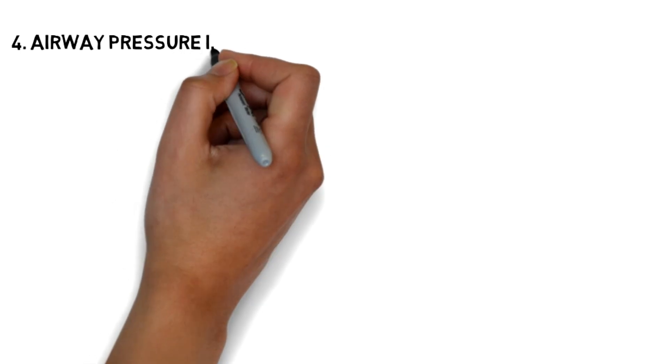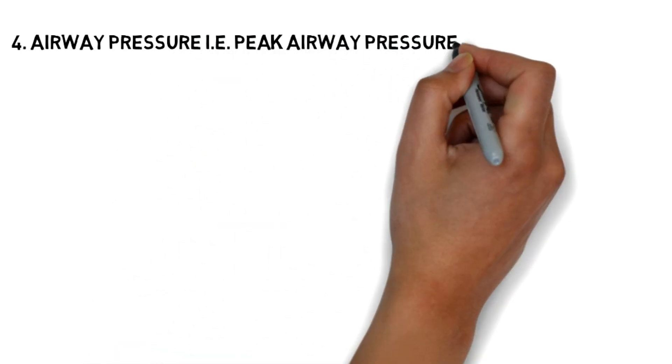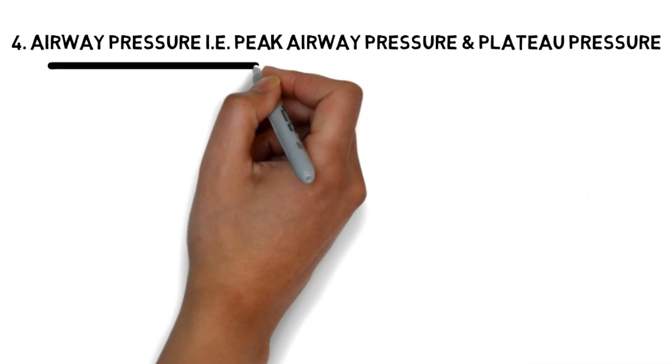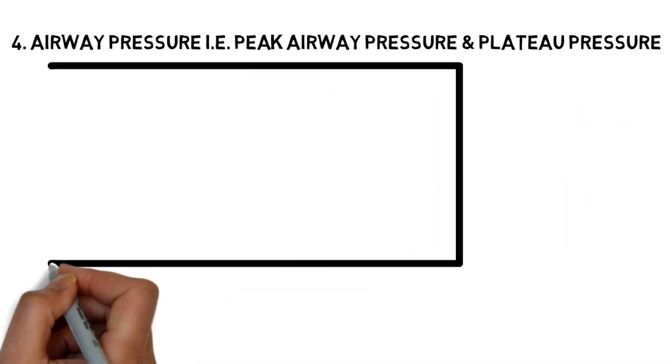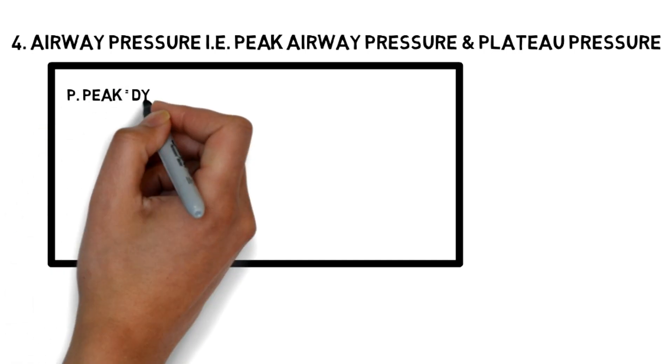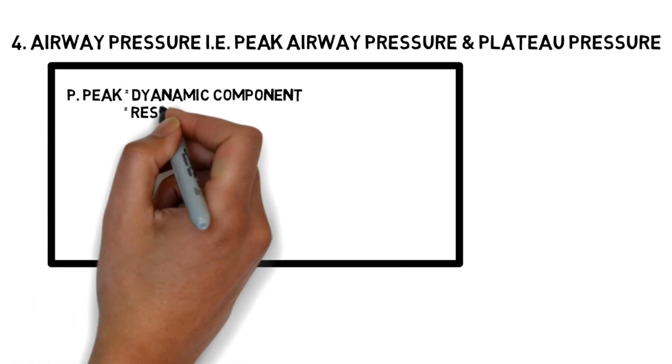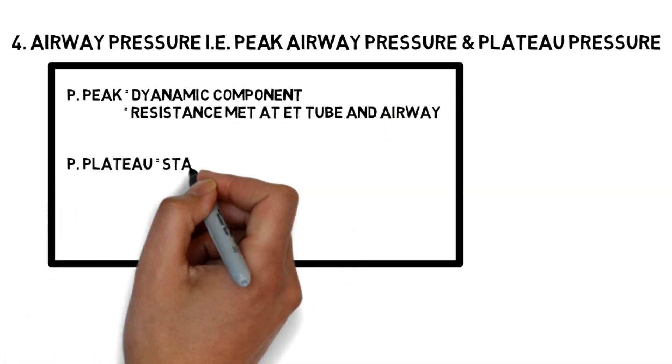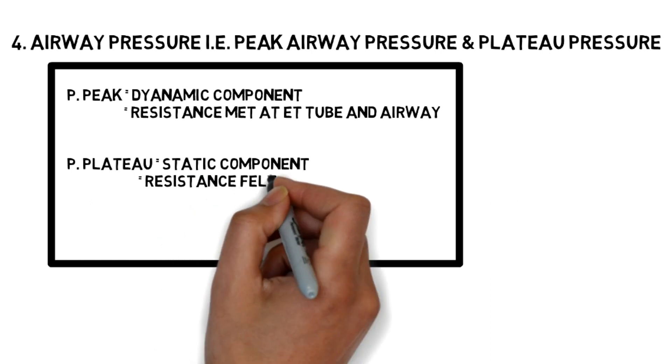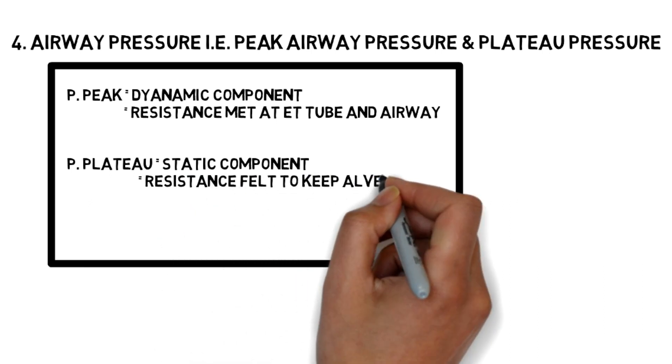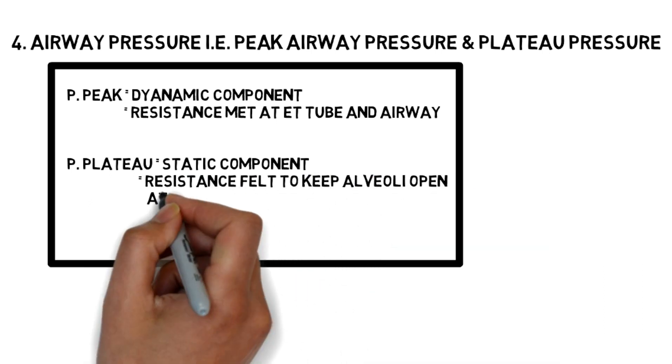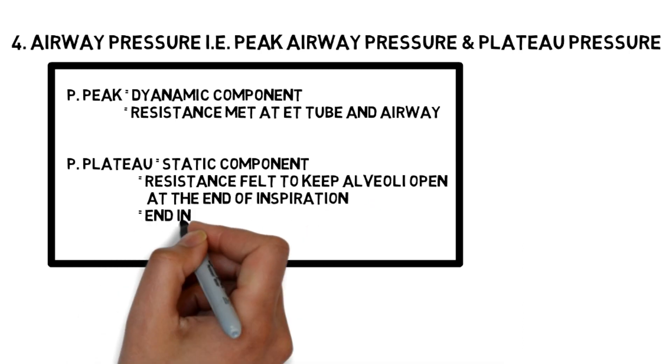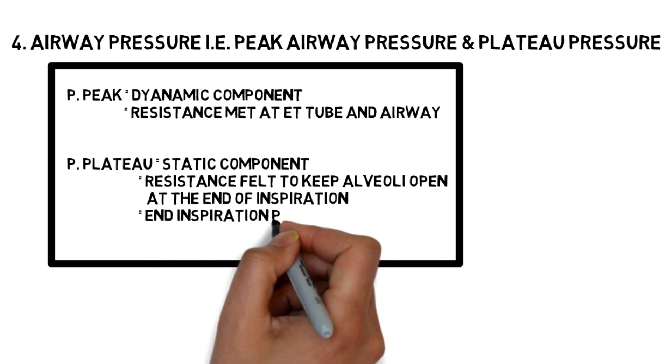The fourth criteria is related to airway pressures: peak airway pressure and plateau pressure. Peak airway pressure is the dynamic component that assesses lung compliance against resistance in the tube and respiratory airway. Plateau pressure is the static component that assesses resistance to keep alveoli open at end-inspiration, also called end-inspiratory pressure.